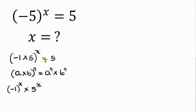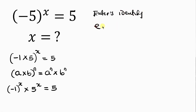So we have 5 to the x, and this is equal to 5. Our next step is to apply Euler's identity to this expression, because negative 1 comes from Euler's identity. Euler's identity states that e to the i pi equals negative 1. So we're going to replace negative 1 with e to the i pi.